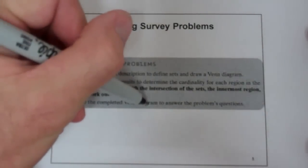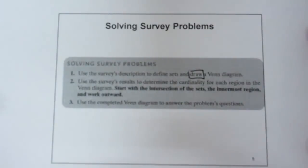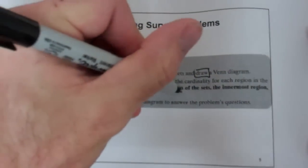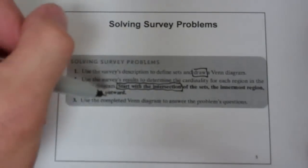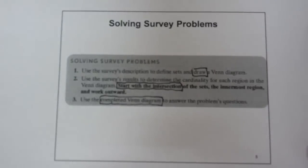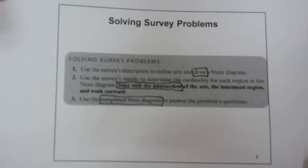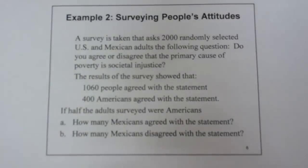Then use the completed Venn diagram to answer the problem's questions. So the process is straightforward: start with the intersections, fill in the cardinality, and then use the completed Venn diagram to answer the questions. Here's our next example, and this is a word problem — this class is mostly word problems.